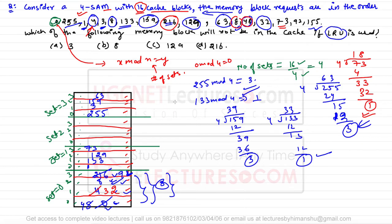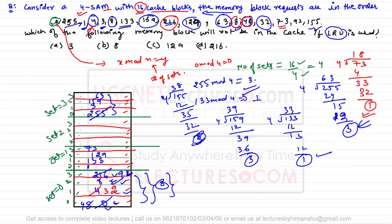Block 155 mod 4 gives remainder 3, so it maps to set number 3. Set 3 currently contains 255, 3, 159, and 63. Looking at the history, 255 was referenced the longest ago, so we replace 255 with 155.